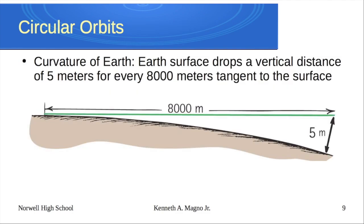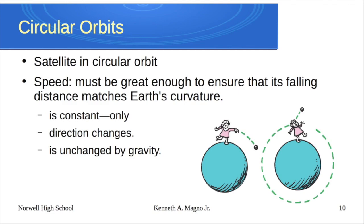This brings us to circular orbits. The Earth has a roughly 5-meter vertical drop for every 8,000 meters tangent to the surface. So if a projectile were shot fast enough to go 8 kilometers before falling 5 meters, it would actually orbit the Earth. Newton theorized that if you could launch something fast enough, you could hit yourself in the back of the head with it. If the speed was great enough to ensure the falling distance matched the curvature of the Earth, you'd get a satellite.